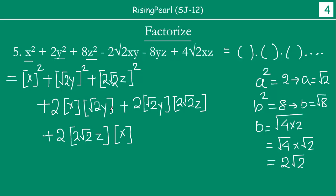We have to make sure each term matches what is given. For the 2xy term, opening it up gives 2 × 1 × √2 × x × y = 2√2·xy. But in the given expression we have minus 2√2, which means either x is negative or y is negative — this term is minus 2√2·y.